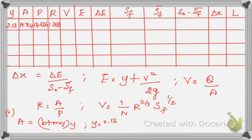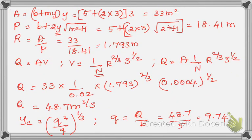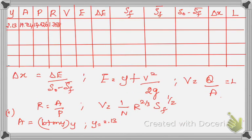For y = 2.13 m: velocity V = Q/A = 48.7 / 19.724 = 2.469 m/s. Specific energy E = y + V²/(2g) = 2.13 + (2.469)² / (2×9.81) = 2.441 m. To calculate ΔE we need a second E value, so we move to the next depth.